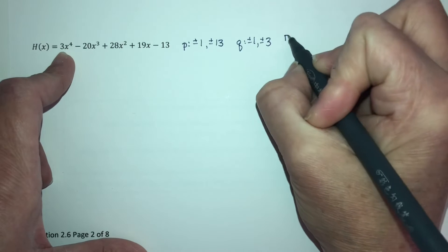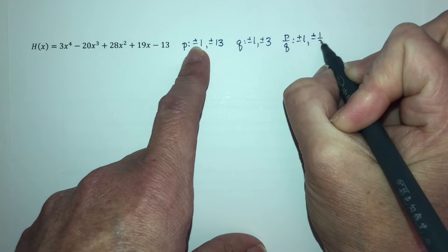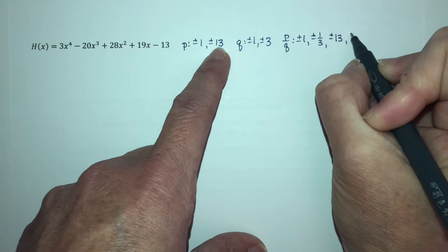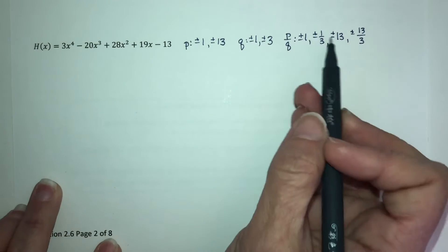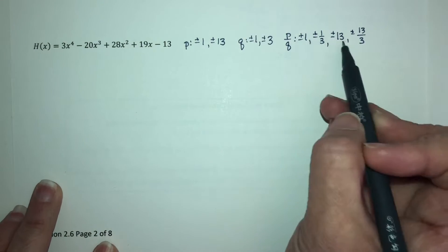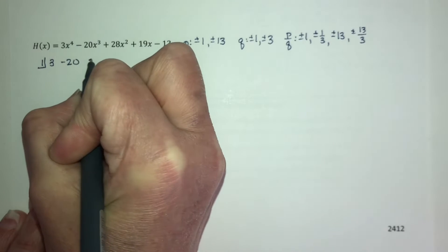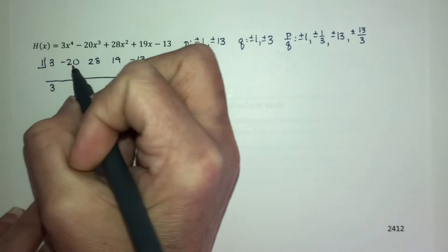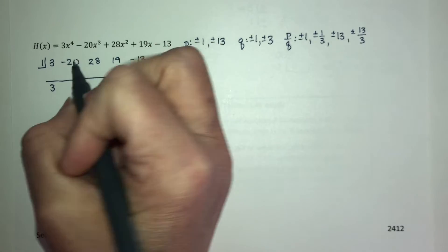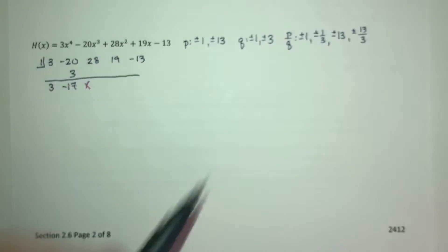So p over q would be 1, 1 third, 13, and 13 thirds. Let's start testing our positive possibilities, and I'm going to start with the integers. So I test 1. Bring down the 3 and multiply, and we get 3, and we get negative 17. When we're testing positives, we want all positive across the bottom to be a bound, so that's not 1.